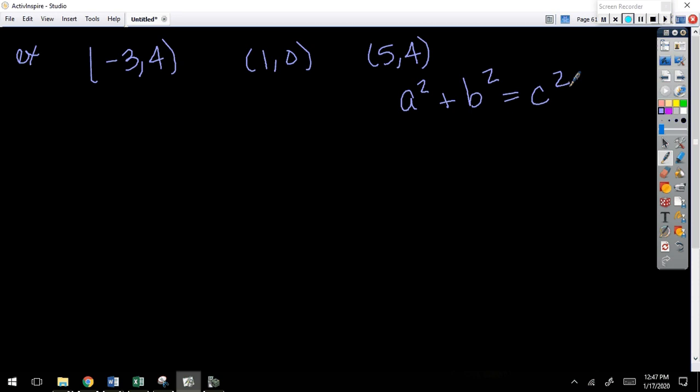So in other words, if I find the length of every side, and how can I find the length of sides? We talked about it, it's the very first thing we talked about. Distance formula. If I find the length of every side, then I can check to see does a² + b² equal c²? Alright, so let's do it.